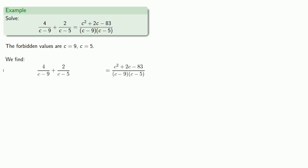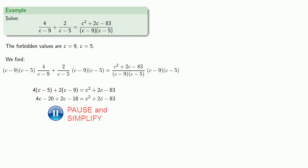If we multiply through by the product of the denominators, c minus 9 times c minus 5, we get... expand, maybe simplify a little more, and since we have a quadratic equation, we'll get all the terms onto one side.